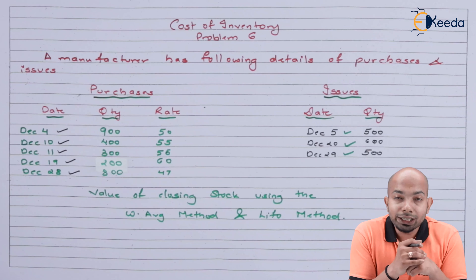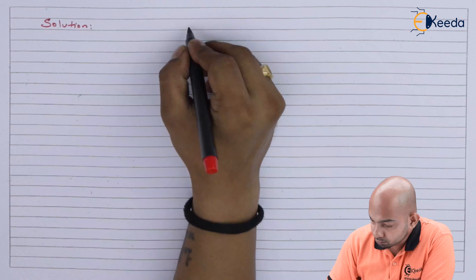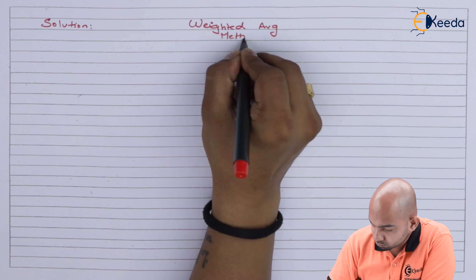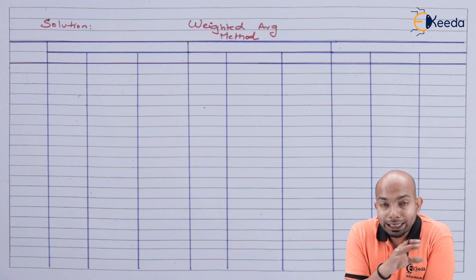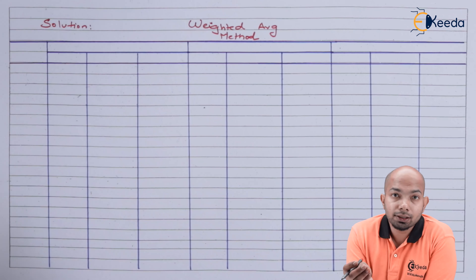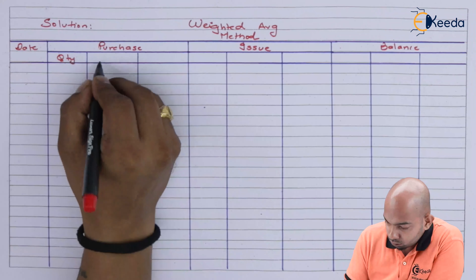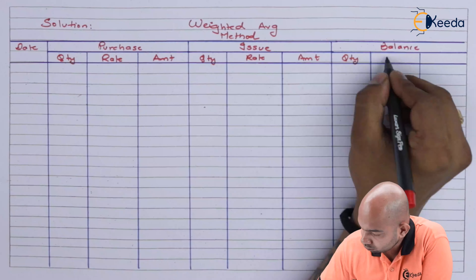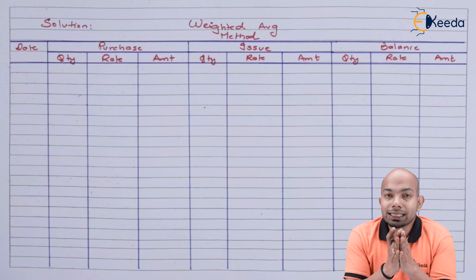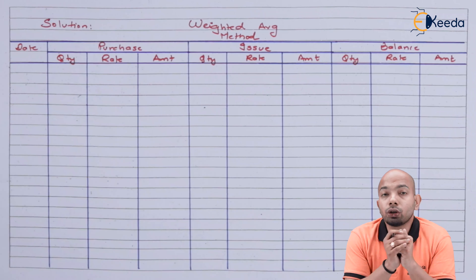Let's start with the weighted average method first. We'll prepare the format for weighted average — the sections are separated into purchases, issues, and balances, and we have to go in chronological order.